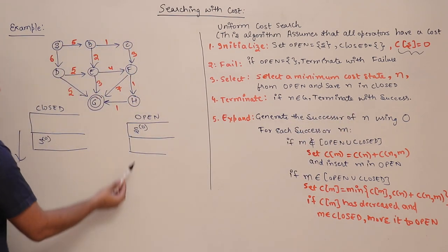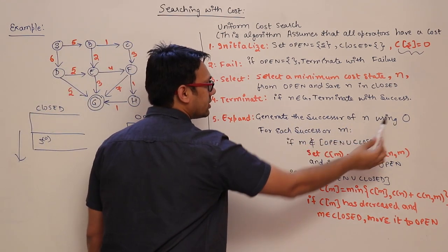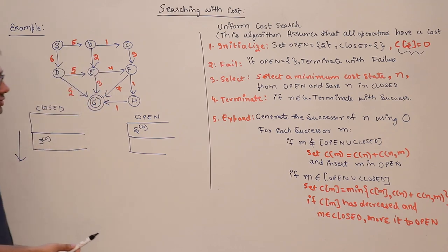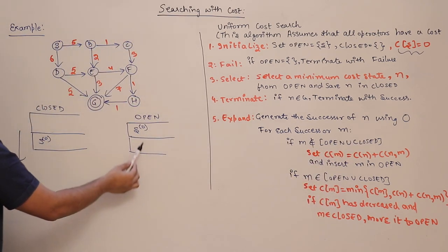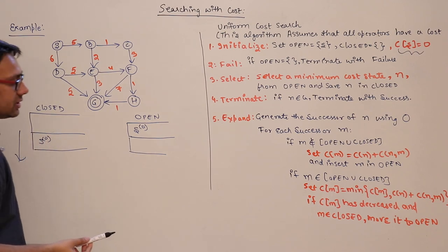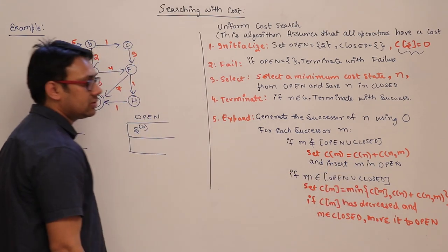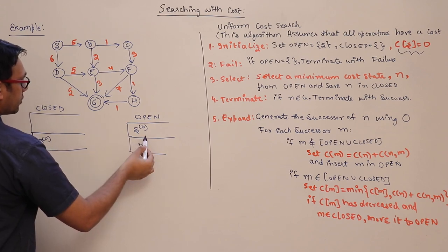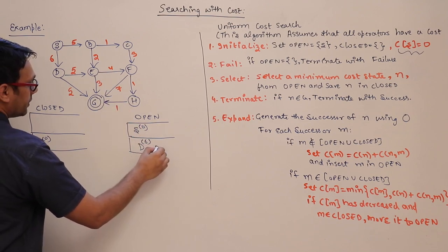S is not a goal state, so we don't terminate. We expand S and generate its successors, which are B and D. These successors are neither present in open nor in closed, so we insert them into open. The cost of D becomes 0 + 6 = 6, and the cost of B becomes 0 + 5 = 5.